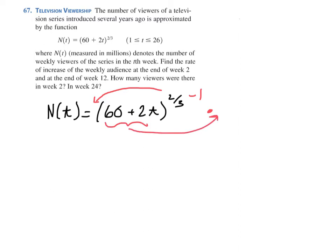We're going to find N'(t) using that general power rule. The 2/3 comes down in front. We rewrite 60 + 2t, that's kind of like our u. We raise this quantity to the -1/3 because 2/3 minus 1 is -1/3. And then using that chain rule part, we have to multiply by the derivative of 60 + 2t, which is 2.